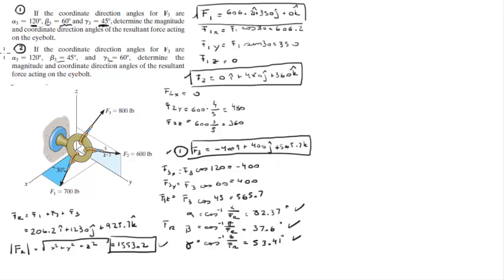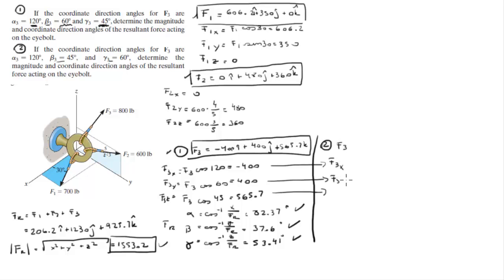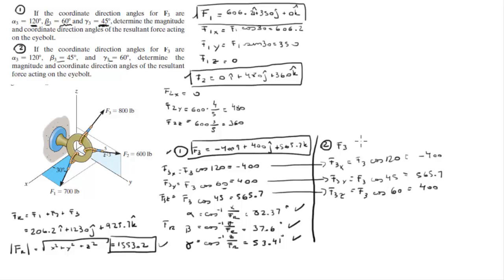Now for the second exercise, it's the exact same approach except some angles are flipped. For F3: the Y angle is now 45° instead of 60°, and the Z angle is 60° instead of 45°. So the X component stays the same at −400, the Y component becomes 565.7, and the Z component becomes 400 — the J and K components are inverted.